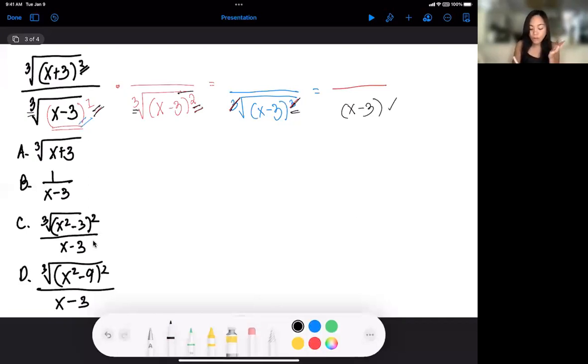But once you multiply this value, you actually need to multiply it on the numerator too. So you have to multiply this one to this.